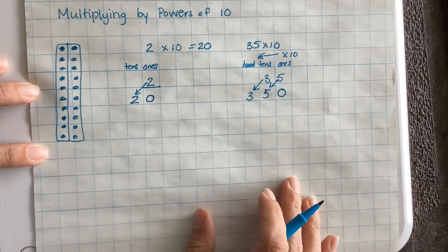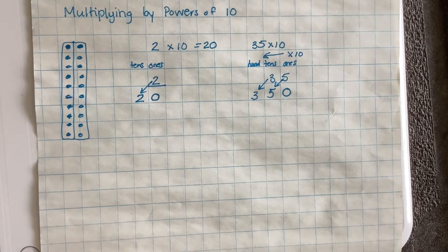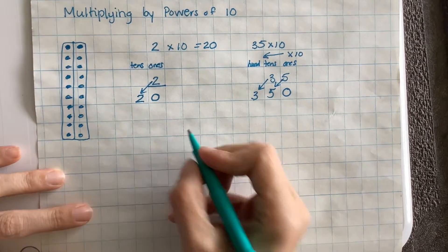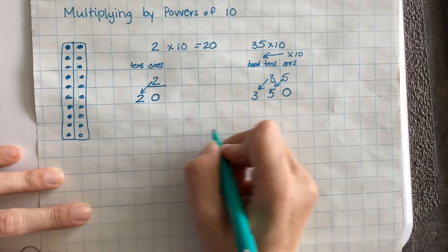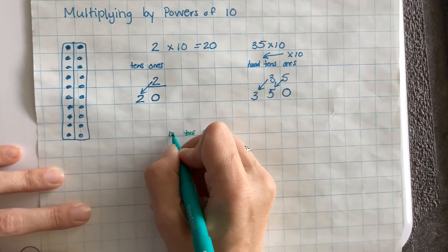But what if we wanted to multiply by, let's say, another power of 10? Let's say hundreds. So in this case, I have my 1s, 10s, 100s, right?